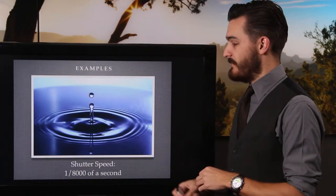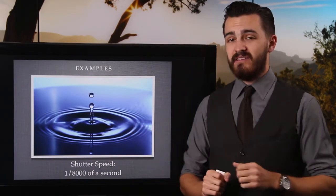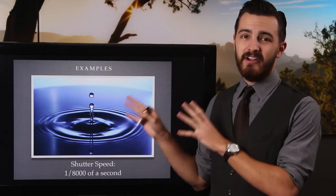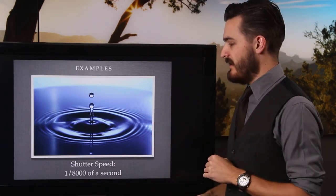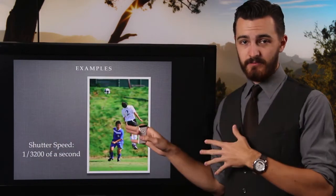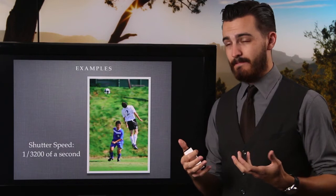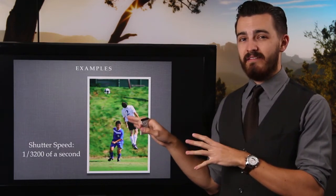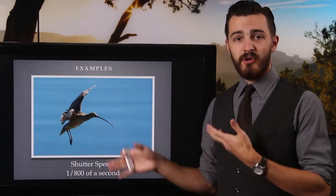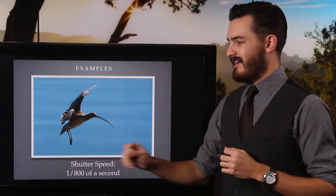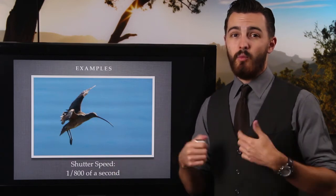At 1/8000th of a second, we freeze something well beyond what the human eye can ever see, but it doesn't let in hardly any light — so that had to be done in a studio with a bunch of flashes pouring light onto a water droplet. At 1/3200th of a second, we can freeze sports action really well, but also not letting in very much light, so it had to be done in the middle of the day. At 1/8000th of a second on a bird coming in for a slow landing, that was plenty fast to freeze him. But for a hummingbird, I would need something more like 1/4000th — the faster the subject is moving, the faster the shutter speed needs to be.